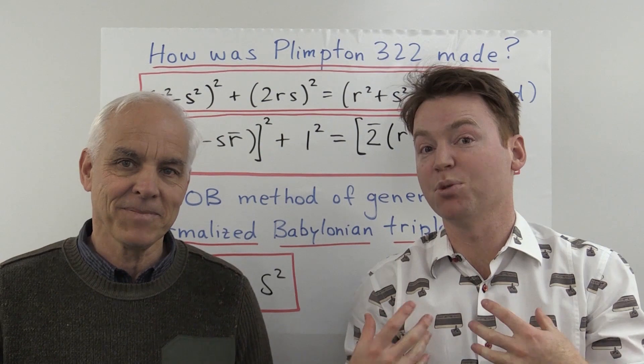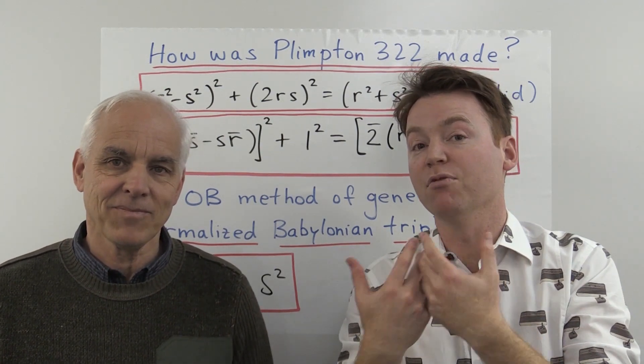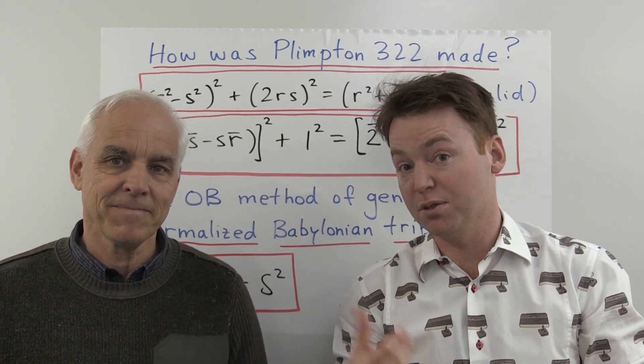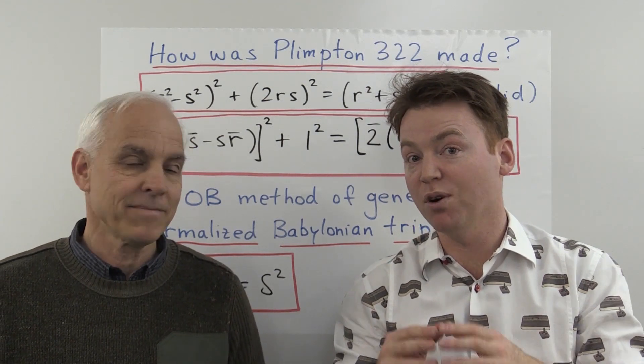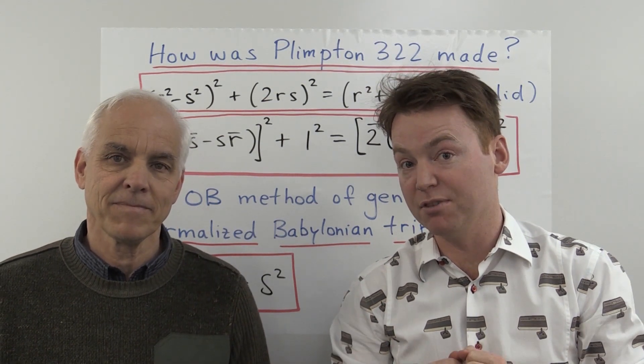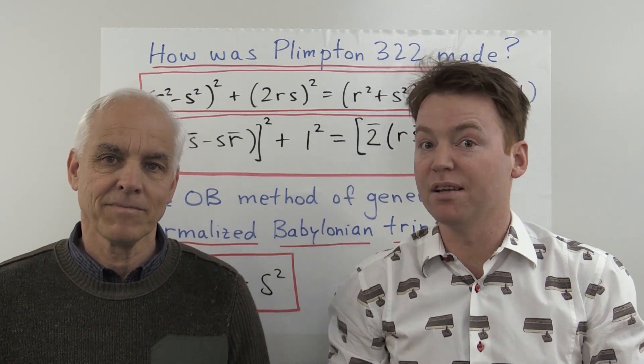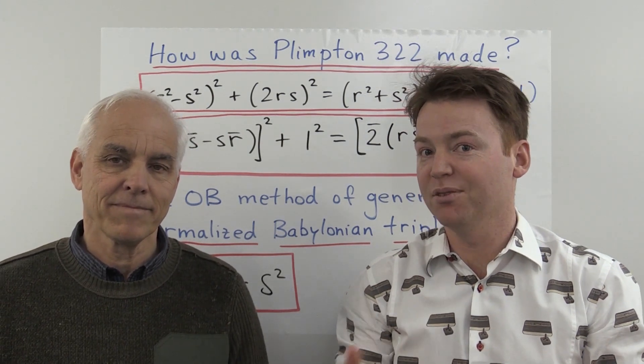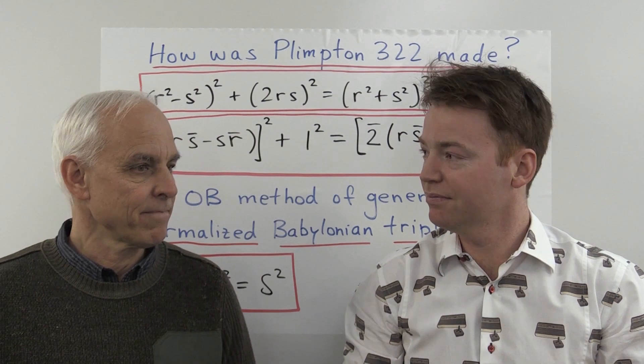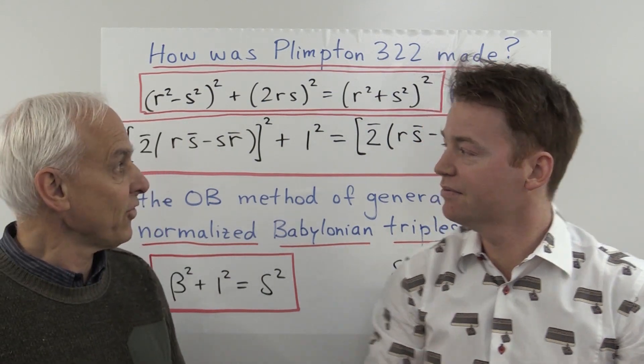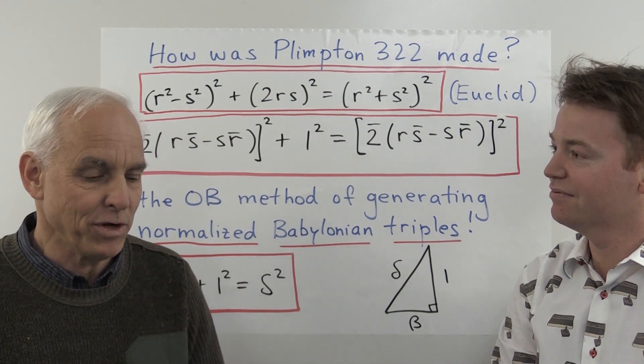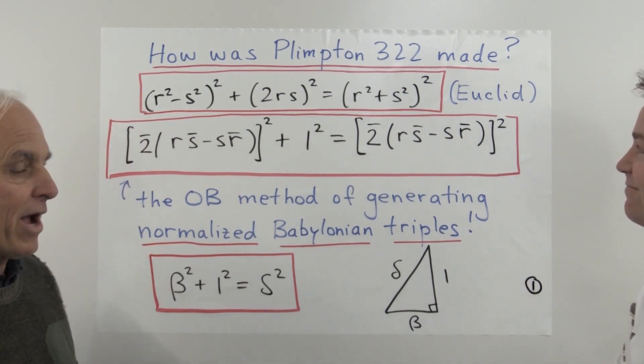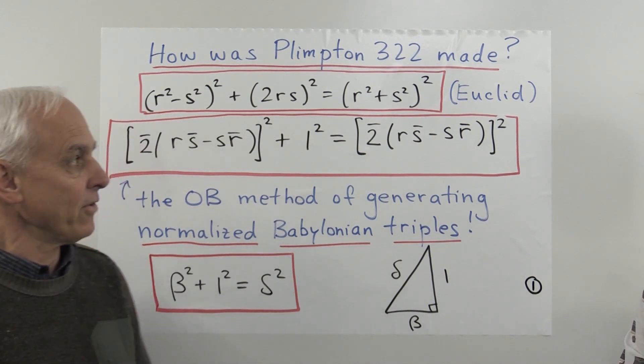Absolutely, and the real purpose here is to establish what the original tablet would have looked like because it's broken and some parts of it are blank. So we really want to understand what was on this tablet originally and then we can really appreciate what the tablet was for. Now a good place to start is with Pythagorean triples, which we're calling Babylonian triples because they really were around more than a thousand years before Pythagoras.